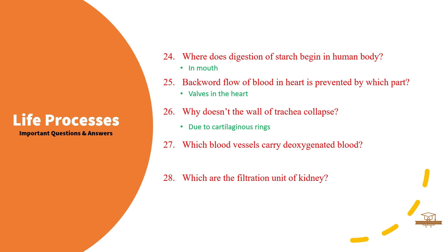Question 27: Which blood vessels carry deoxygenated blood? Answer: Pulmonary artery. Question 28: Which are the filtration units of the kidney? Answer: Nephrons.